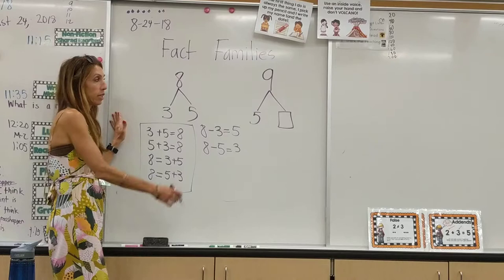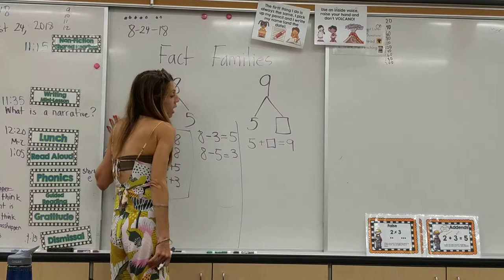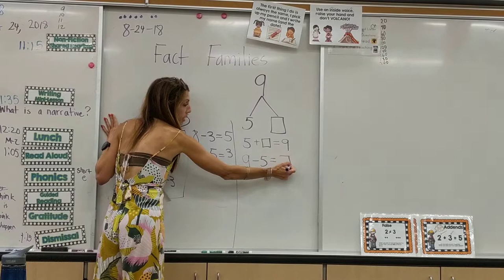The other way that we use number bonds and equations is writing the missing number. So for example, they could write five plus missing number equals nine. They can also write nine take away five equals the missing number.